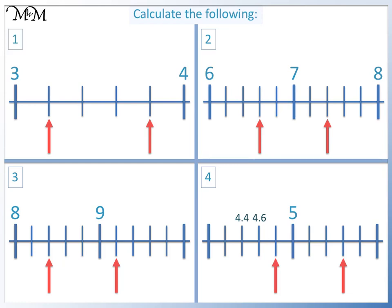Question 1. To get from 3 to 4, there are 5 steps. So we will be counting in 0.2s. Starting from 3, we have 3.2. Continuing, we have 3.4, 3.6, and 3.8.